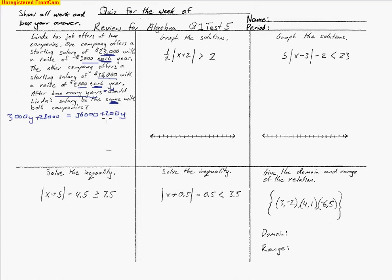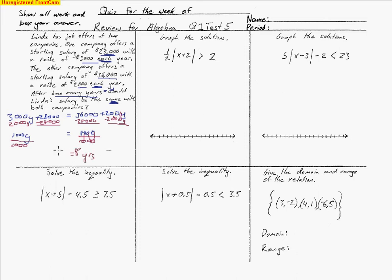I'll subtract 2,000y from both sides, and also subtract 28,000 from both sides. That leaves me with 1,000y equals 8,000. I divide by 1,000 on both sides, which cancels out the zeros and leaves me with 8. So it will take 8 years for the two companies to give you the same amount.